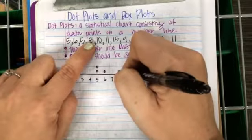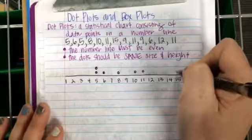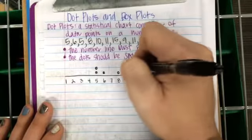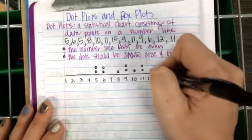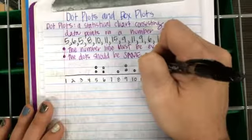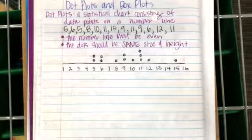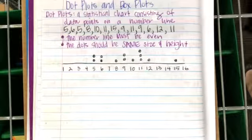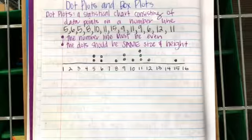Continuing to plot: eight, ten, eleven, fifteen, nine, eleven, nine, six, twelve, eleven, eleven. From here on out they'll be dots instead of X's. Another format is a frequency table where you put tallies — we'll use frequency tables later on.